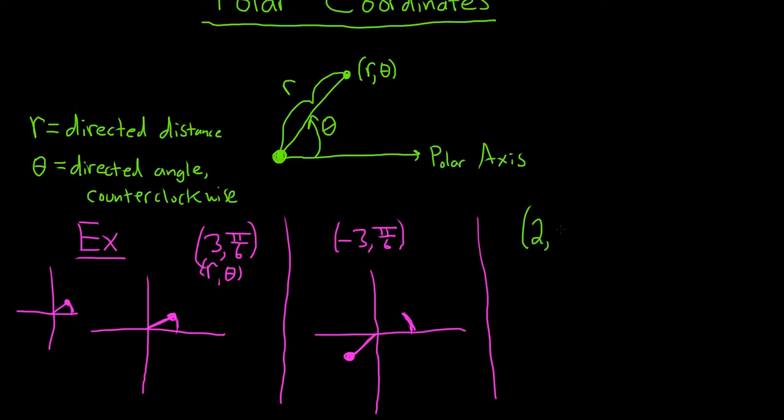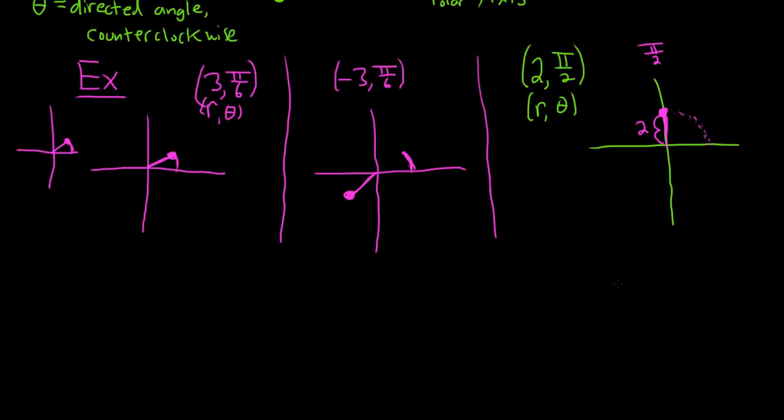Let's do a bunch more until you feel like maybe you get it. How about (2, π/2)? So again, it's (r, θ). So first you travel π/2. So when you do that, that's going to put you here at π/2, because this angle here is π/2 on the unit circle. So there's your π/2. And then you go 2, so here you are. So there's your point, and this distance here is 2.